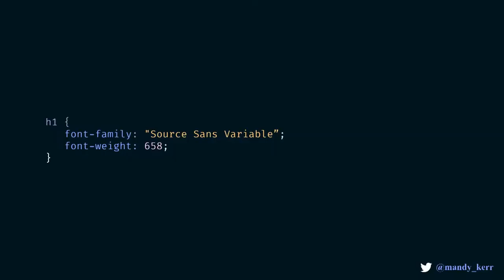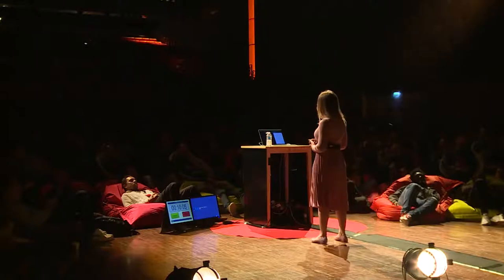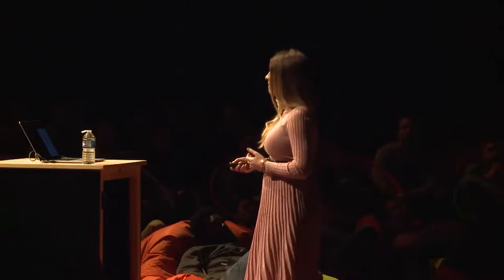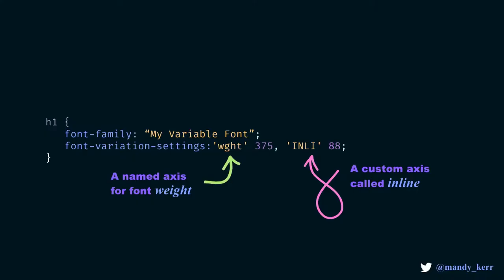Over in our CSS, we can reference our fonts exactly the way we normally would — we have our font-family and then the font-weight property. But the benefit is we can pick any number within that range, like 658 if we want, or 200 or 400 like you normally would. This is really great for things like font-weight, which is a known axis — something we already have a CSS property for. But for anything custom, we need to use a new property.